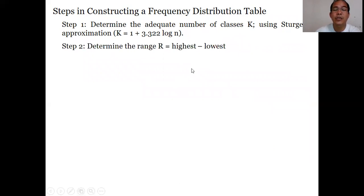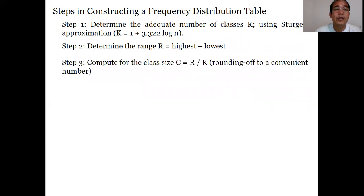Step number 2: Determine the range. Very simple. Just determine the highest score, then subtract the lowest score. So highest score minus lowest score. The result is the range. Step number 3: Compute for the class size. The class size is represented by letter C. It can be computed by dividing the answer of step 2 by the answer of step 1.